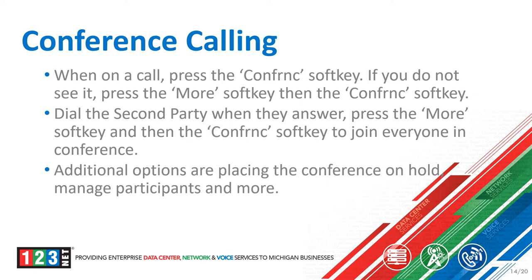These phones have the ability to conference in additional callers. When you're on a call, there will be a conference option above a soft key that you will press to initiate the conferencing feature. If you do not see that option, press the more button as it may be listed there. Once you press the conference option, you will dial the second party to initiate the conference. Once they answer, you will press the conference option — press more and then conference again to bring everyone together. To add another user, follow the same steps.